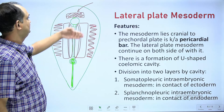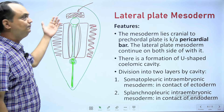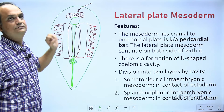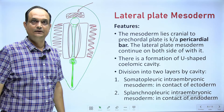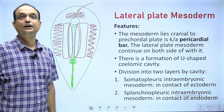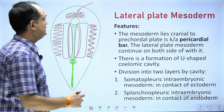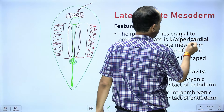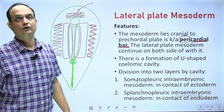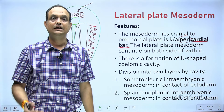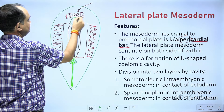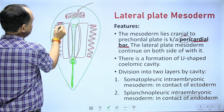The intra embryonic mesoderm is present throughout the whole plate between ectoderm and endoderm, except at the pre-chordal plate anteriorly. The mesoderm anterior to or cranial to the pre-chordal plate is known as the pericardial bar, because this area in future will form the cardiogenic area, or heart tube. The lateral margins of this bar are continuous with the lateral plate mesoderm.